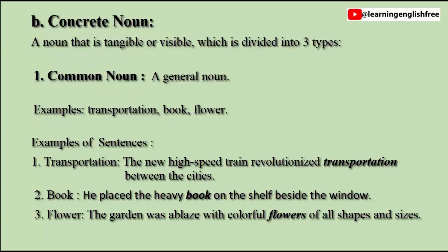B. Concrete noun — a noun that is tangible or visible, which is divided into three types. 1. Common noun: a general noun. Examples: Transportation, Book, Flower. Sentences: The new high-speed train revolutionized transportation between the cities. He placed the heavy book on the shelf beside the window. The garden was ablaze with colorful flowers of all shapes and sizes.